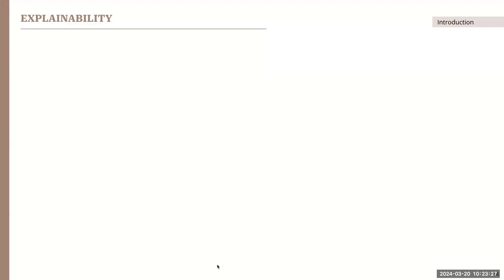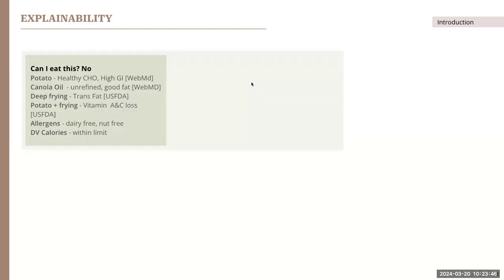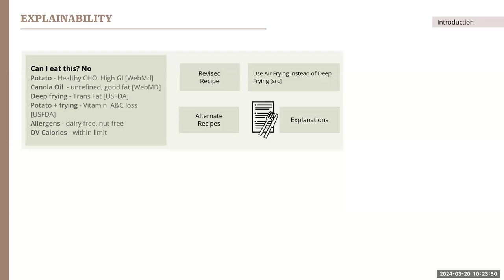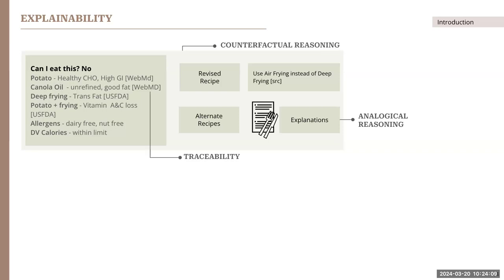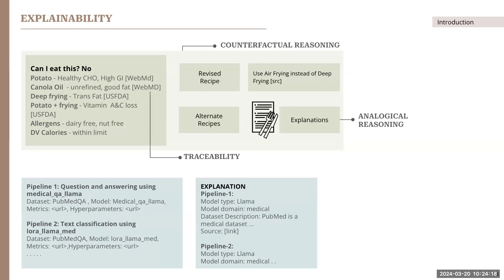That brings us to the explainability aspect. We are trying to address two aspects of explainability: reasoning and traceability. In case of food, given a food item is not suitable and a list of reasons is provided, we try to identify alternate food items — this is referred to as counterfactual reasoning. Given we identify alternate food items, we try to give explanations as to why this particular list of recipes is similar to the user's input — that is termed analogical reasoning. And given we also provide the source of where the information is coming from, that is defined as traceability. Similarly, in the AI pipeline domain, explanations are provided as to why a pipeline is relevant to what the user requested, which is analogical reasoning. We also provide the source of the pipeline in the form of a published paper or GitHub repository, which refers to traceability and ensures reproducibility of the pipelines as well.